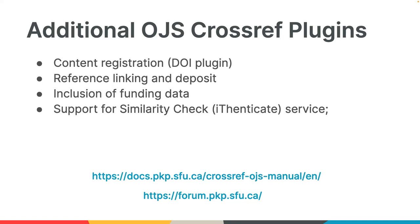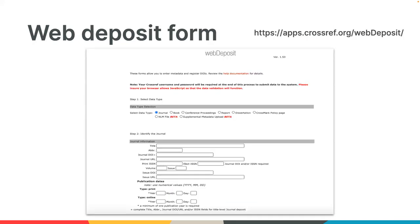There are links on the slide for OJS documentation and their support forum. For members not using OJS, we have a manual entry form called the Web Deposit Form. It's very basic — you enter your data field by field, and it writes and submits the XML for processing. With this form you can register journals, books, conference proceedings, reports, dissertations, policy pages for our Crossmark service, and supplemental metadata. You don't need to know XML to use the form — you just type the information straight in. It is more limited than an XML file, but a lot more simple.